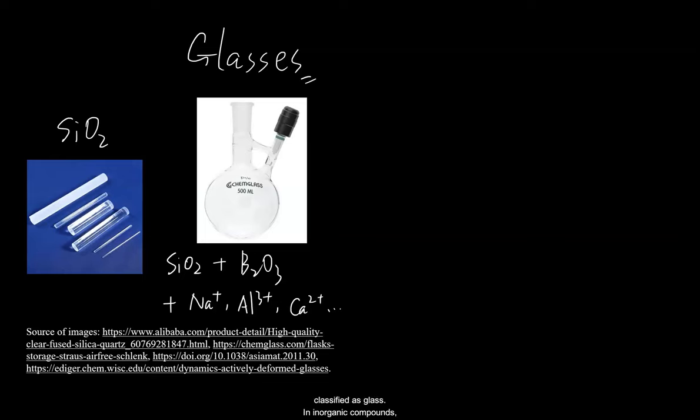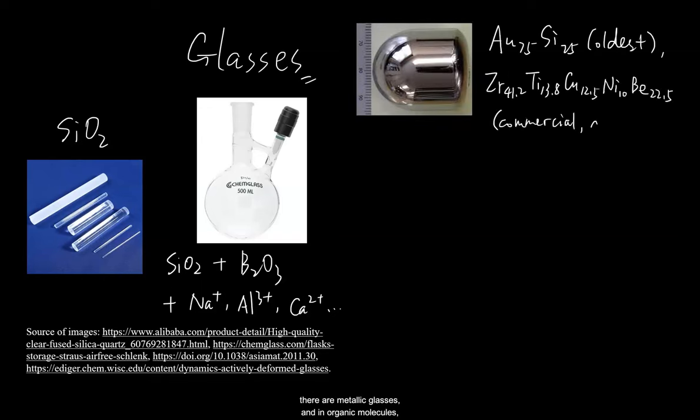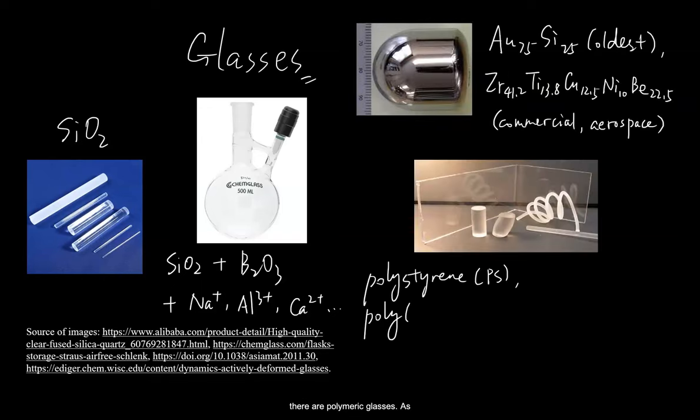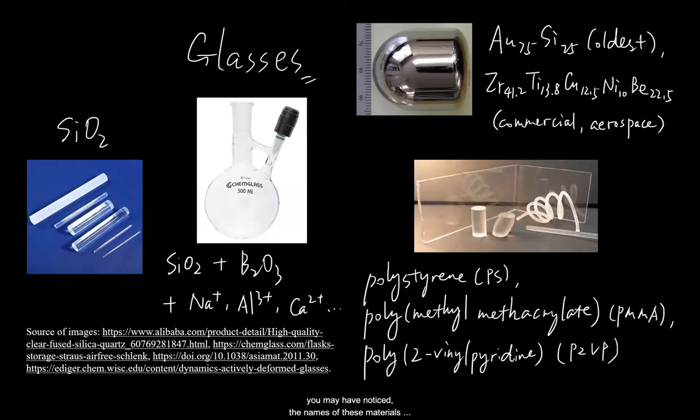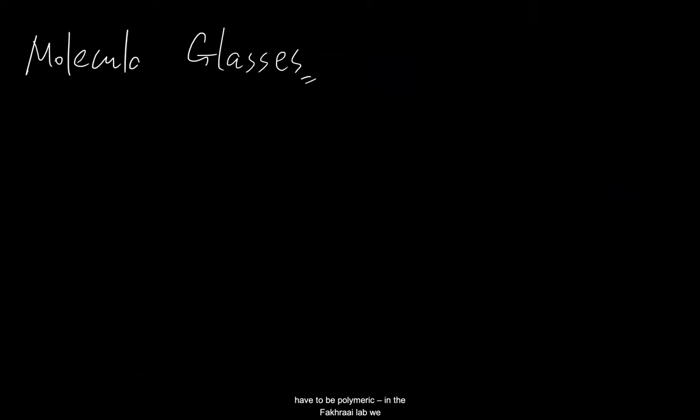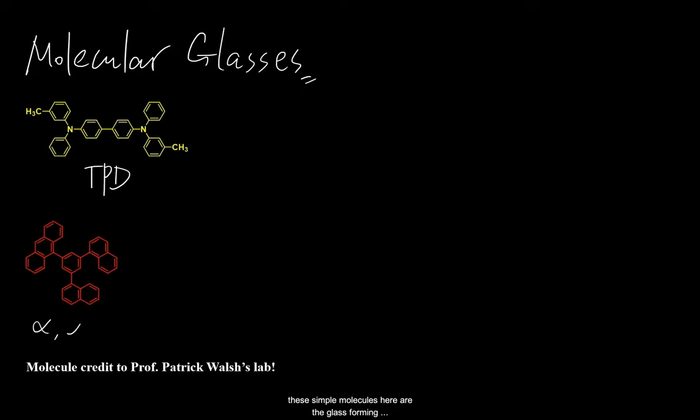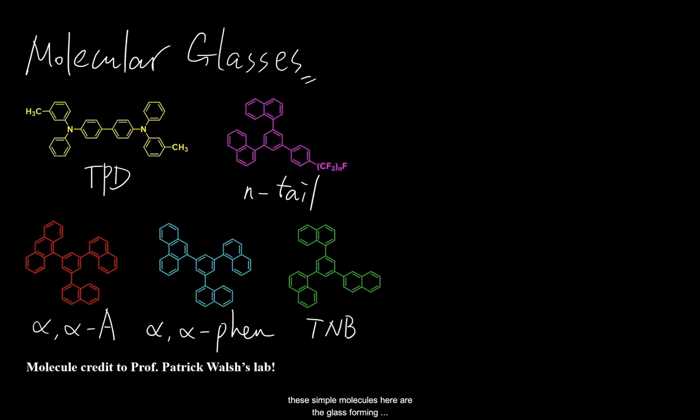In inorganic compounds, there are metallic glasses, and in organic molecules, there are polymeric glasses. As you may have noticed, the names of these materials are becoming longer, so you may want to cut me some slack if I don't mention the full names of the oligomeric molecular glasses coming up. And not all organic glasses have to be polymeric. In the Fakhraai lab we study molecular glasses. In case you're wondering about their chemical compositions, these simple molecules here are the glass forming molecules.